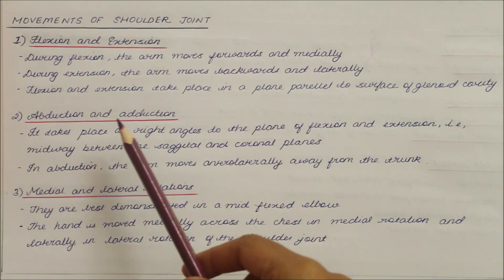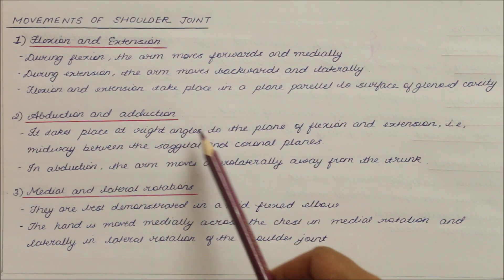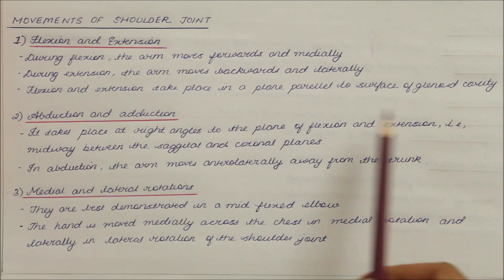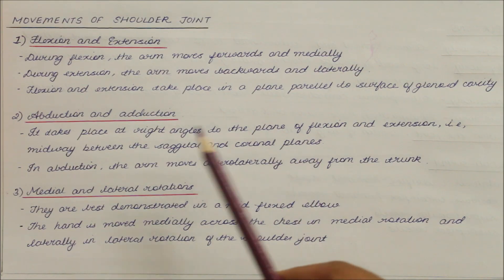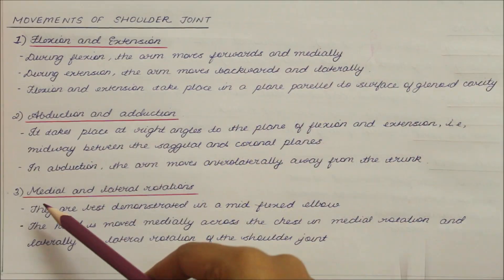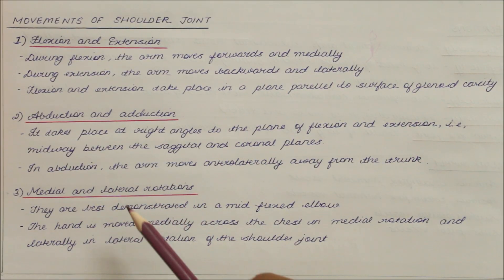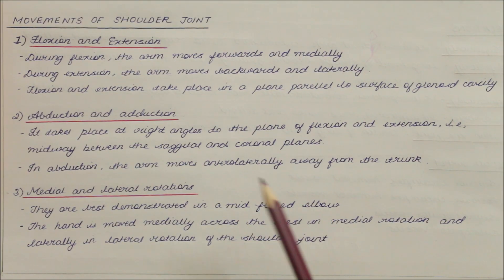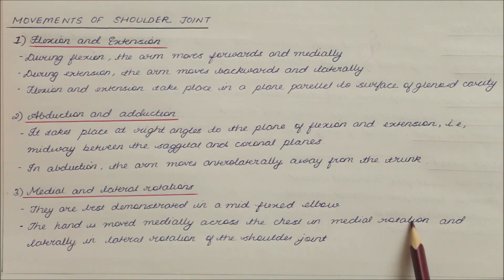During flexion, the arm moves forwards and medially — medially means towards the body. During extension, the arm moves backwards and laterally — laterally means away from the body. Abduction and adduction take place at right angles to the plane of flexion and extension, midway between the sagittal and coronal planes. In abduction, the arm moves anterolaterally away from the trunk. Medial and lateral rotations are best demonstrated with a mid-flexed elbow: the hand moves medially across the chest in medial rotation, and laterally in lateral rotation.